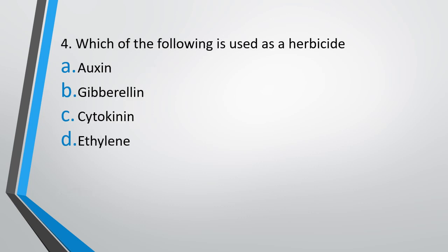Question 4: Which of the following is used as a herbicide? Option A: Auxin, Option B: gibberellin, Option C: cytokinin, or Option D: ethylene. The correct answer is Option A, Auxin. 2,4-D is a synthetic auxin which is used as a herbicide. 2,4-D stands for 2,4-dichlorophenoxyacetic acid.